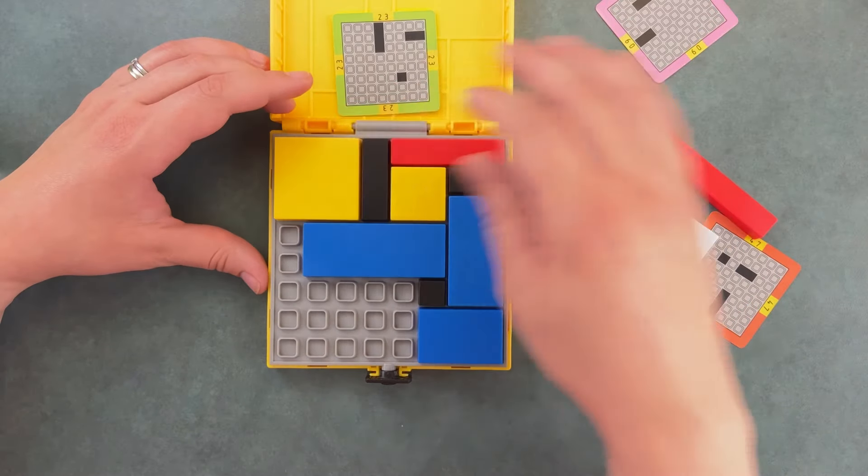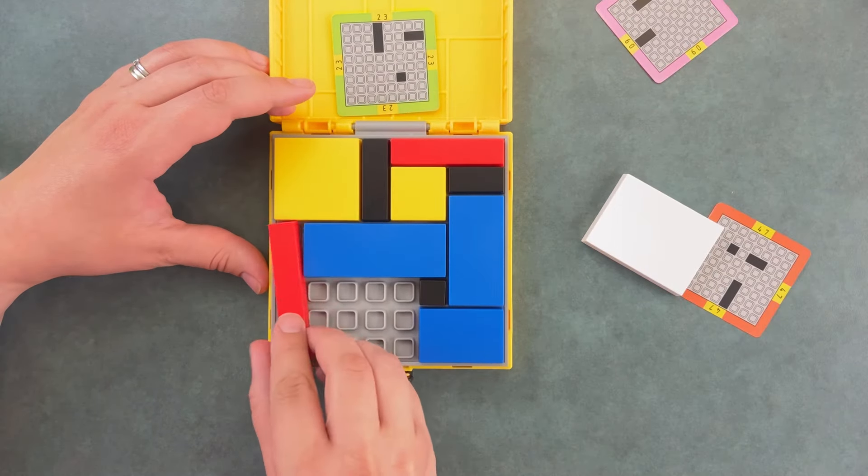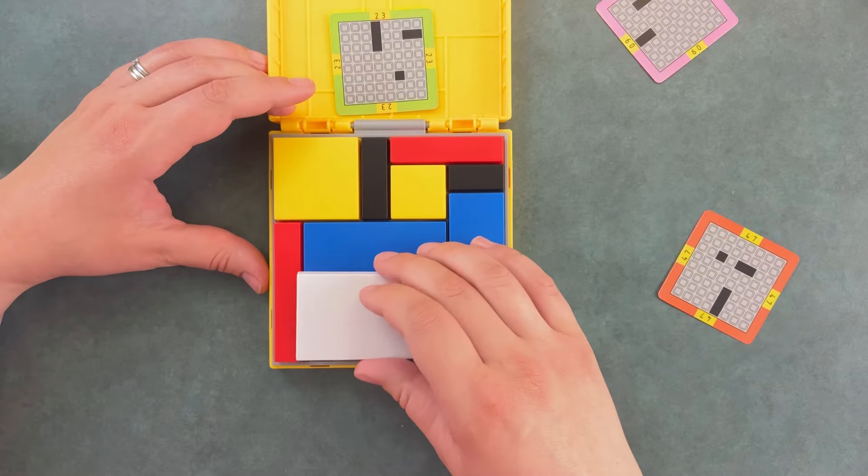This yellow piece needs to go on the top. The red piece can go on this side of the puzzle, and lastly the white piece can go right there.